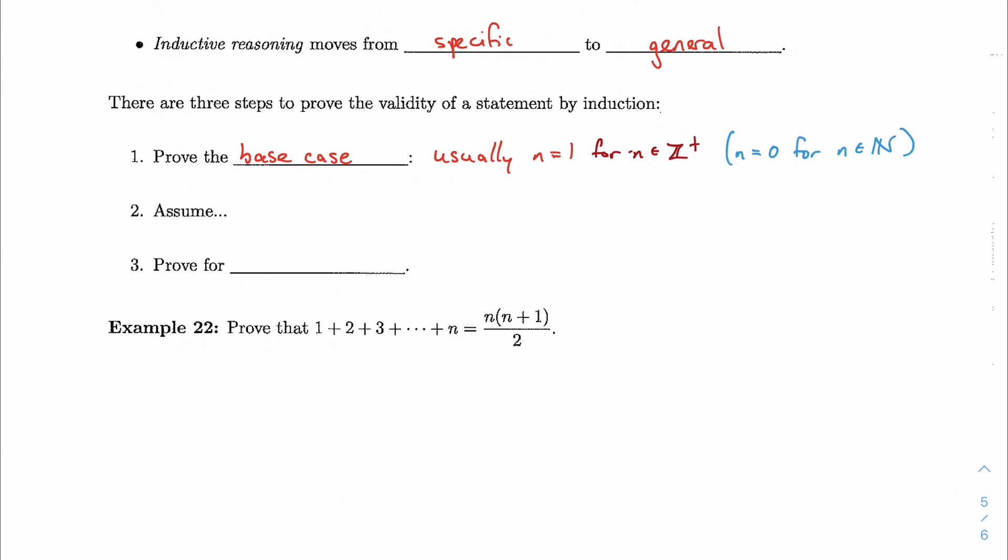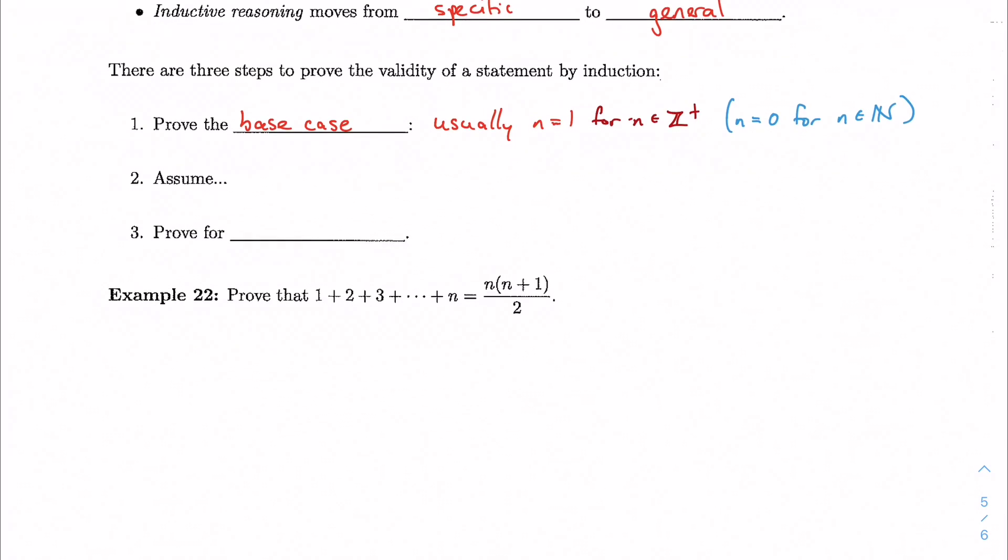I could give other cases. If I said somewhere in the statement, like if we look at example 22, if I told you that this only worked when n was greater than 5, then your base case would be 5. Your base case is whatever the lowest possible case is.